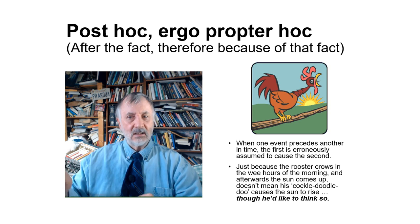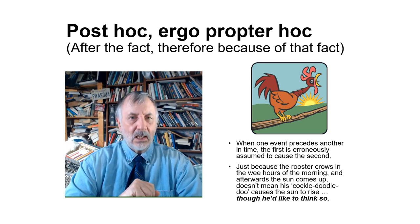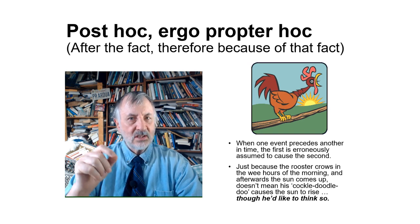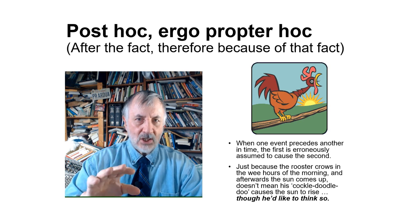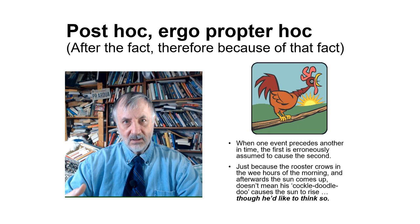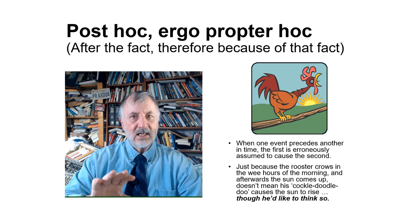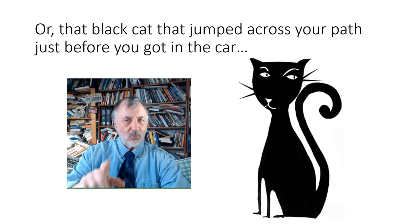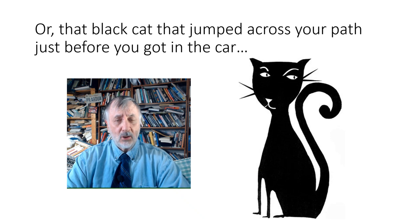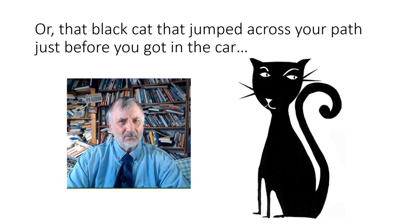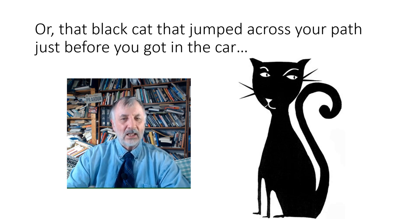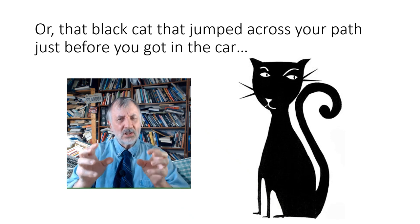'After the fact, therefore because of the fact.' For instance, the rooster crows before the sun rises — that doesn't mean the rooster's crowing causes the sun to rise. If you made that reasoning, that would be fallacious. Just because one thing happens first doesn't mean it necessarily caused the second thing. Or that black cat that jumped in front of you before you got in the car didn't necessarily make you late for work — maybe sleeping an hour later contributed. And it didn't cause your traffic ticket — maybe going 50 in a 25 zone had something to do with that.